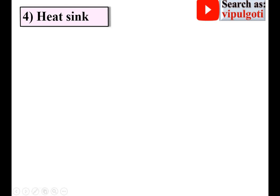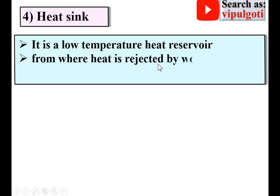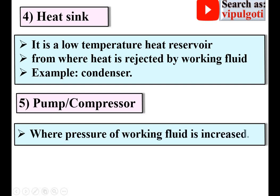The fourth component is the heat sink — a low-temperature heat reservoir from where heat is rejected by the working fluid. The working fluid rejects heat at the heat sink, and that heat is received by the heat sink. Example: condenser. The fifth component is the pump or compressor, where the pressure of the working fluid is increased.